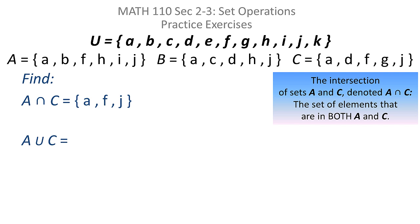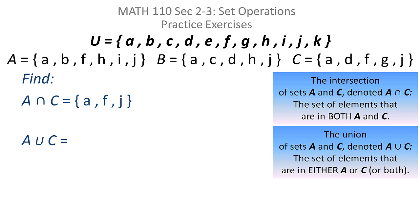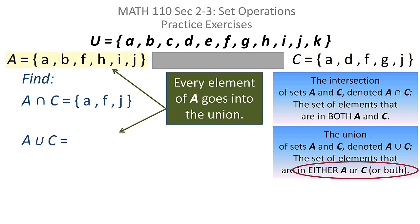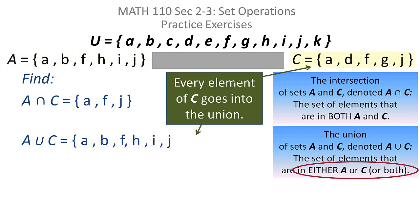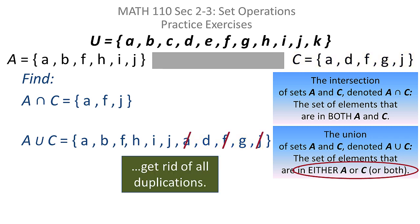Now I want to find A union C. The union of two sets consists of the elements that are in both or either. So this time, again, I'm only dealing with A and C — I don't care about B right now. Everything from A goes in, everything from C goes in, and the only thing I have to do now is eliminate duplicates. We don't list the same element twice in the set, so I just get rid of the duplications.